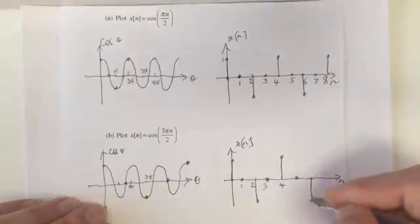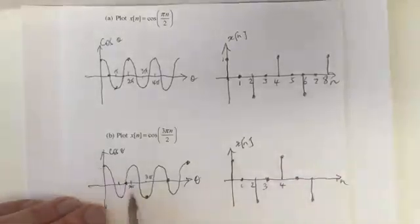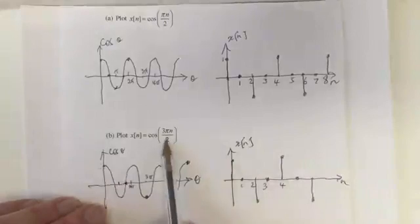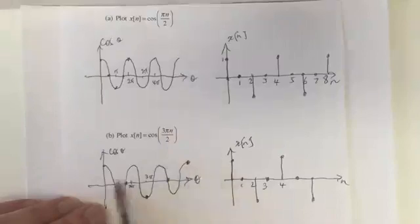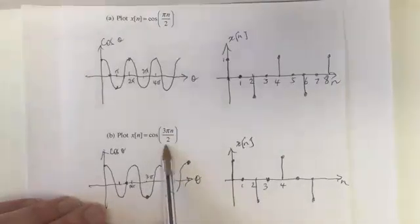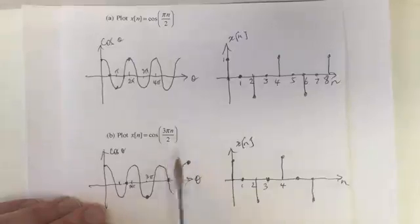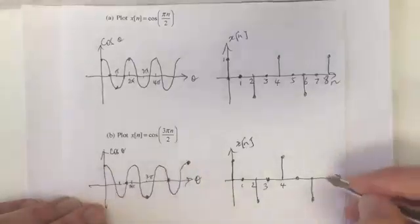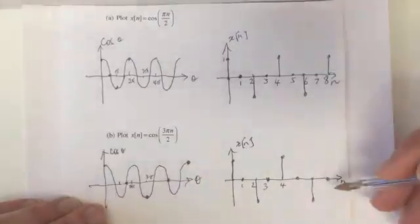So what do we notice here? Even though this is stretched out, it's a higher value of omega 0, we're going further through the waveform with each sample. Because the waveform is at a higher frequency, it changes more quickly compared to our sampling rate. But we get the same graph in discrete time.